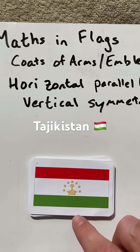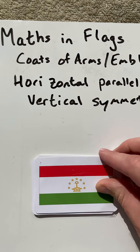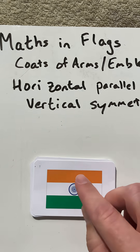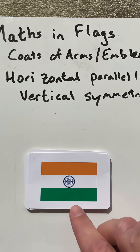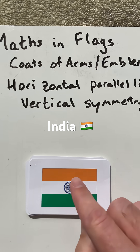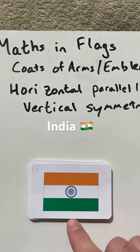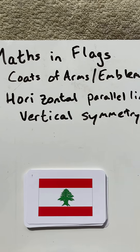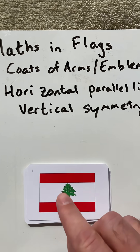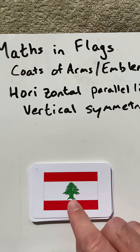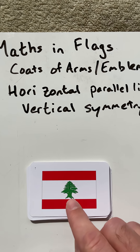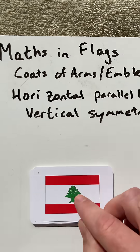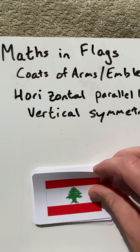Tajikistan does have a vertical line of symmetry. India, as we've seen in a previous short, definitely has a vertical line of symmetry. Lebanon nearly does, but the branches and leaves of the tree aren't perfectly reflective.